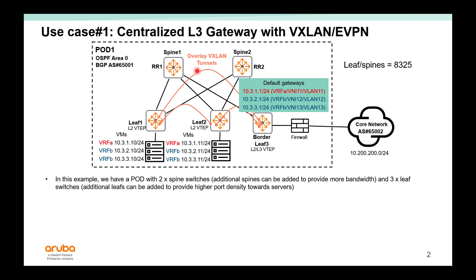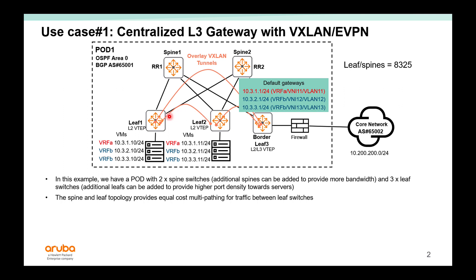Additional spine switches can be added in the future to provide more bandwidth to the leaf switches. We have three leaf switches, and you can add more leaf switches to provide higher port density towards the servers. This spine and leaf topology provides equal cost multi-pathing for traffic between the leaf switches. In this example, we have two uplinks from a leaf switch, so if a third spine comes in, there will be a third uplink. The leaf switches will load share traffic when multiple equal cost uplinks exist.